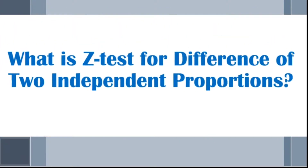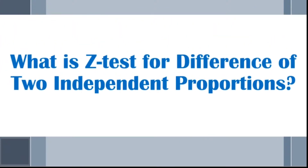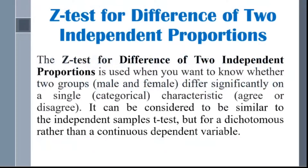The Z-Test for Difference of Two Independent Proportions is used when you want to know whether two groups — for example, male and female — differ significantly on a single categorical characteristic like agree or disagree. It can be considered similar to the Independent Samples T-Test, but for a dichotomous rather than a continuous dependent variable.